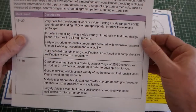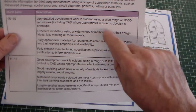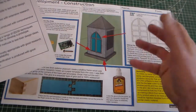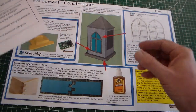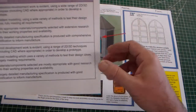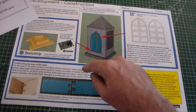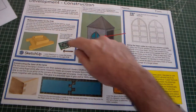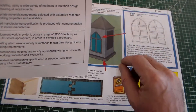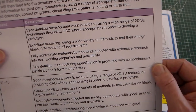If we look at the top band of the mark scheme, it says: very detailed development work is evident, excellent modelling using a wide variety of methods. This refers to modelling — 3D modelling. You could have card modelling using foam board or cardboard, as opposed to CAD modelling. These two 3D CAD drawings count as modelling. It also requires fully appropriate materials and components — we've talked about plywood, the type of glue, and 3D printing from PLA. There should also be a fully detailed comprehensive justification to inform manufacture.